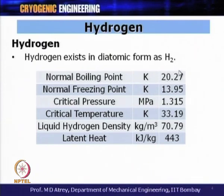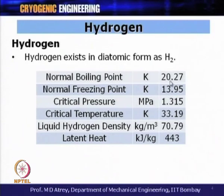Liquid hydrogen can provide cooling at around 20 Kelvin and above. To reach temperatures below 20 Kelvin with hydrogen, the pressure must be removed — that is, one has to go into vacuum to reach lower temperatures. At 13.95 Kelvin, liquid hydrogen will get converted to solid hydrogen.